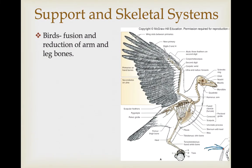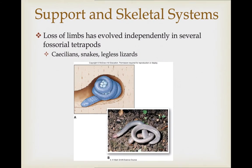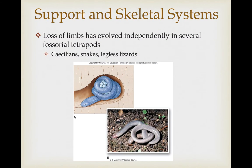The skeletal system of birds has shown a lot of fusion and reduction of bones, including bones of the arms and legs — this is a common theme in birds associated with flight. The complete loss of limbs has evolved independently in several fossorial tetrapods, such as caecilians in the amphibians, and in reptiles we see snakes and legless lizards that have independently lost their appendages.